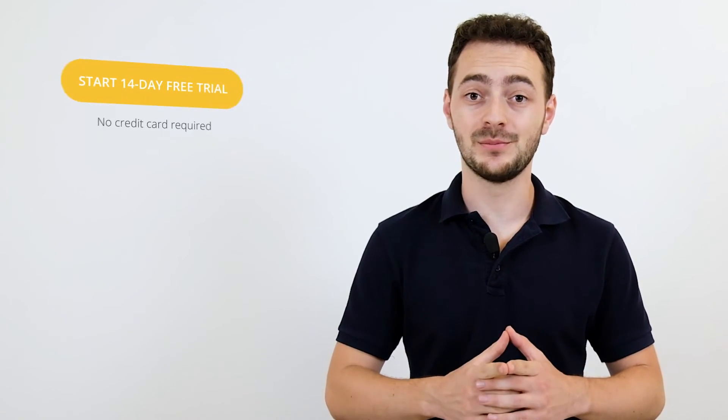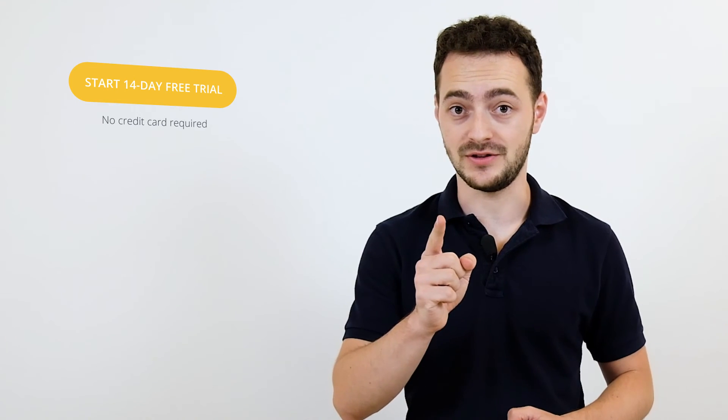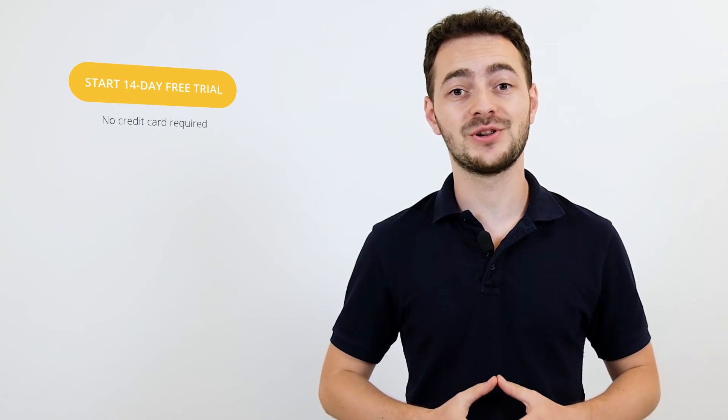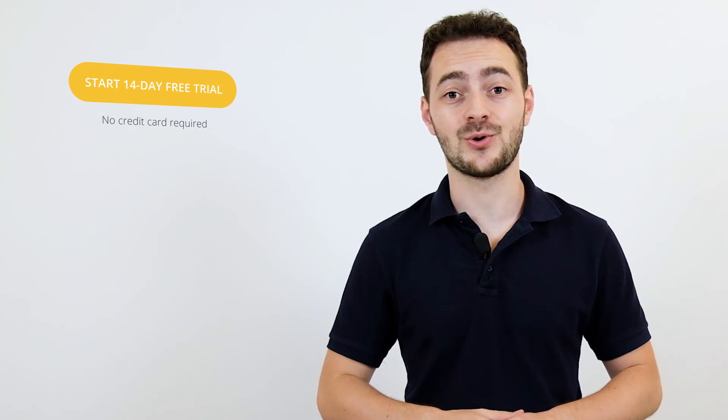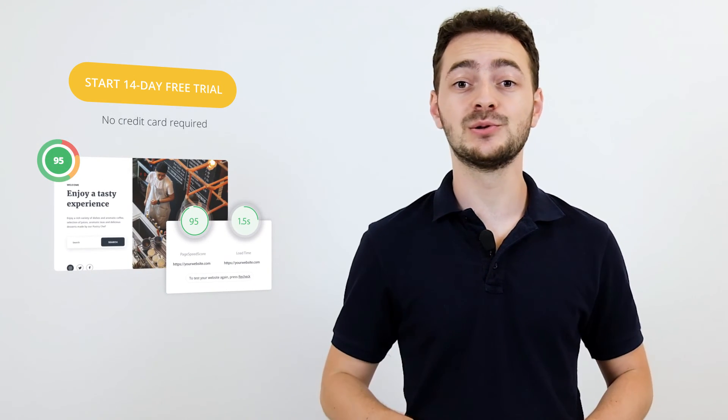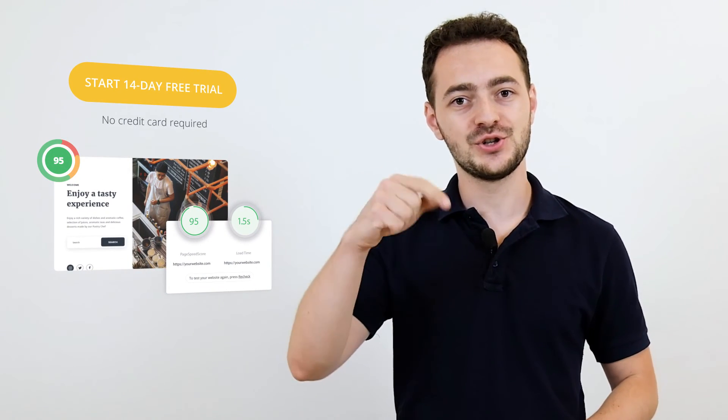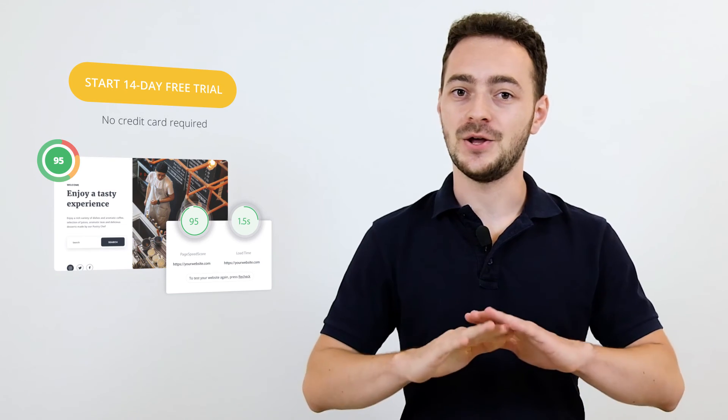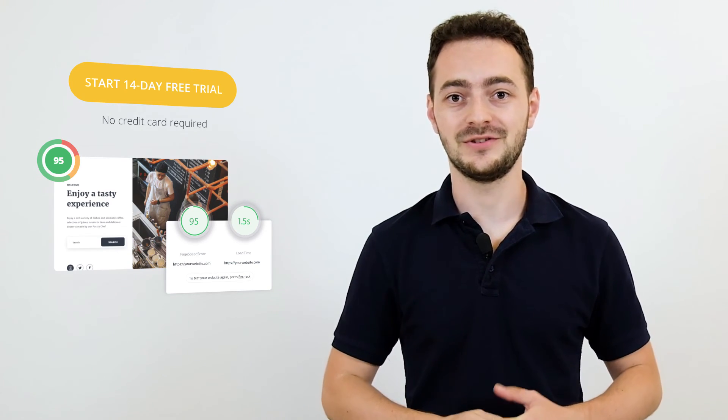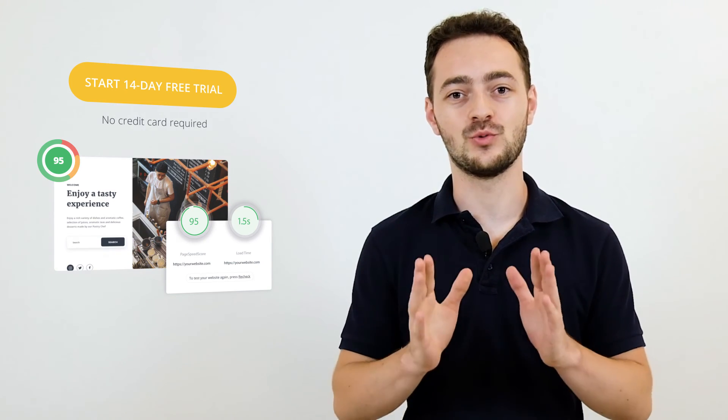While we're on the subject, don't forget to check out 10Web's builder, templates and other features, including the Speed Optimizer, that will get your client's website an instant page speed score of 95+, absolutely for free for two weeks. Just follow the link in the description. No risks or credit cards involved. It's just a fantastic all-in-one WordPress deal.